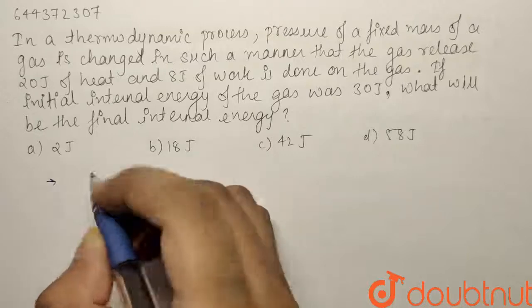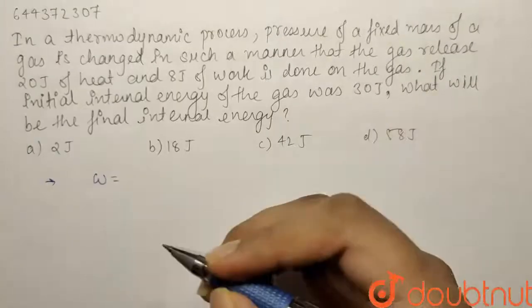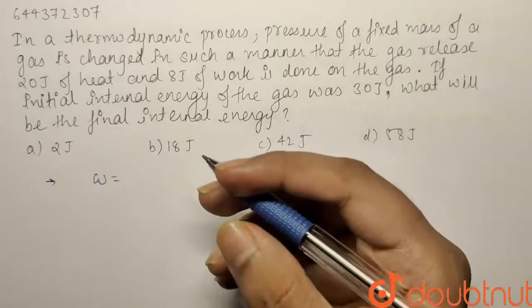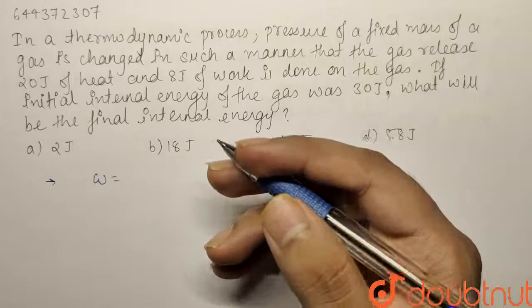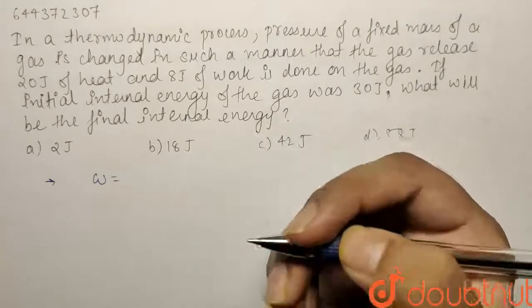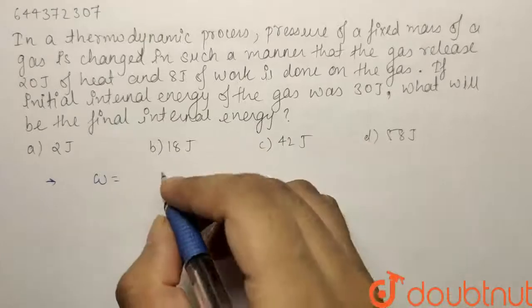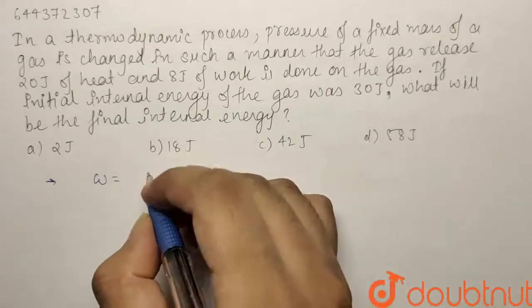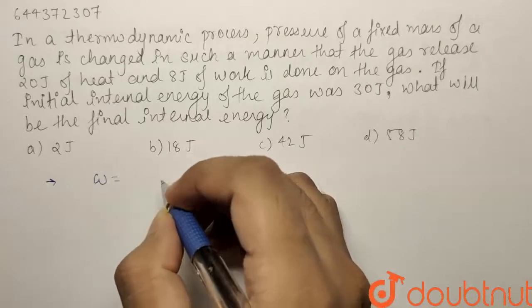What we have been given is that work is being done on the gas. So what does it mean by work being done on the gas? That basically means you are decreasing its volume - you are applying pressure on it and decreasing its volume. So if work is done on the gas,